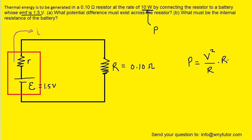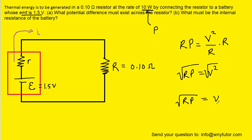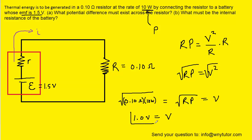To do that, we'll multiply both sides of the equation by R, and then square root both sides. So the potential difference across the resistor is equal to the square root of its resistance multiplied by the power generated through that resistor. We have the power of 10 watts and the resistance value of 0.10 ohms, so we plug those two values in and get exactly 1 volt — the potential difference across the resistor and the correct answer to Part A.